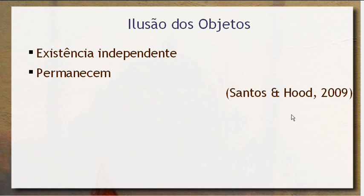Você forma imagens de objetos. Formar a ilusão de objetos é uma coisa que a gente aprende — isso é estudado pela psicologia do desenvolvimento. A gente começa a acreditar e perceber o mundo como se existissem esses objetos com uma existência independente, como se o mundo não fosse um conjunto de fenômenos dinâmicos, mas fosse segmentado nesses objetos. E a gente tem a sensação de que os objetos permanecem no tempo e no espaço, apesar das coisas estarem em constante mudança. Um objeto é um modelo que a sua mente cria sobre o mundo — um modelo que nós usamos para poder perceber e operar sobre o mundo.